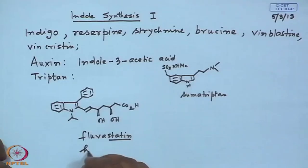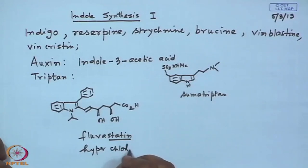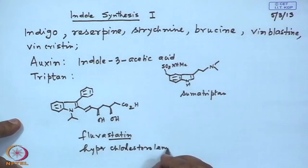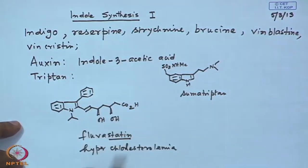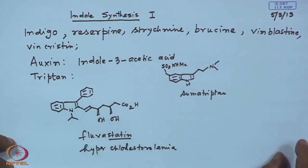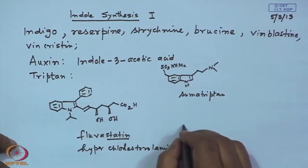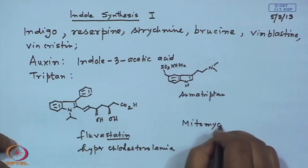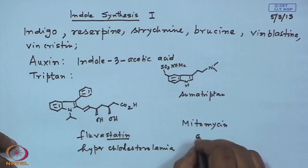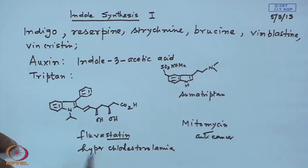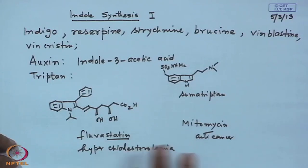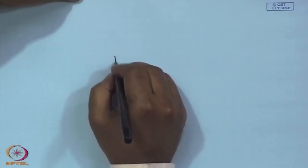Treatment for hypercholesterolemia — so that means it reduces blood cholesterol. There are also quite a few more famous drugs, for example, mitomycin. You have to remember some of the names — not all the names, but some of them. Mitomycin is a very famous drug used as an anti-cancer drug. Because of the importance of these compounds, there are so many indole syntheses. When you talk about indole synthesis, there are so many, so you have to classify and sub-classify.